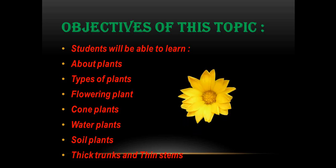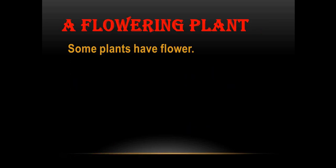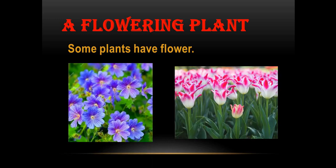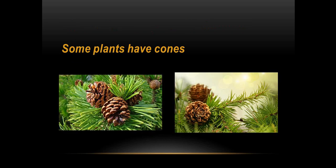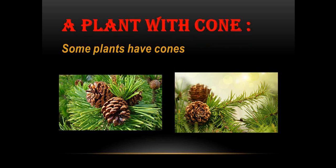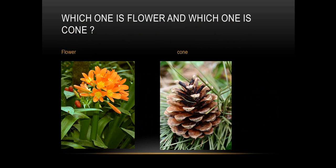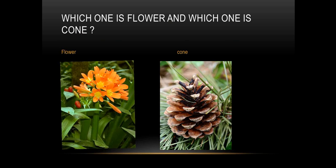Here is a flowering plant. Some plants have flowers. Here are two pictures in front of you — you can see the flowers. These are called flowering plants. The next type: some plants have cones. This brown thing is a cone, so this is called a cone plant. Tell me: which one is a flowering plant and which one is a cone plant? The orange one is the flower plant and the brown one is the cone plant. Good job!